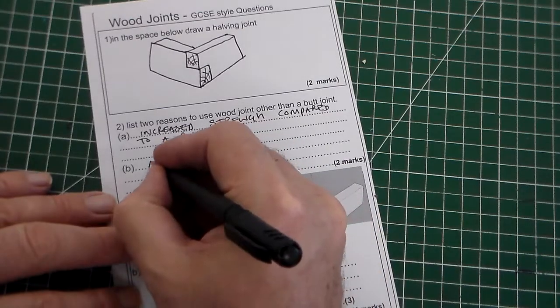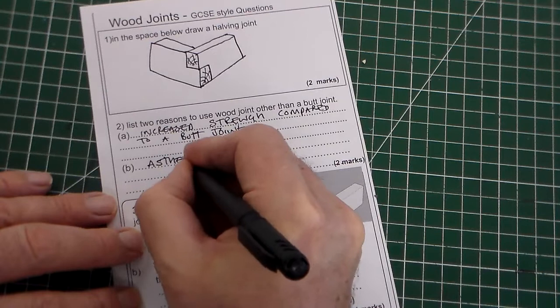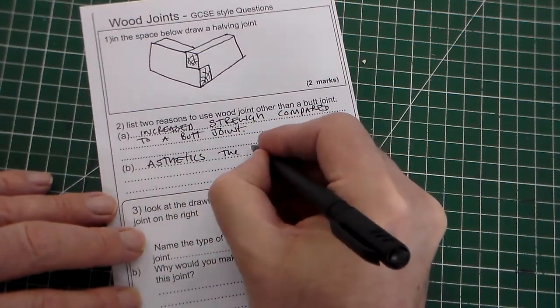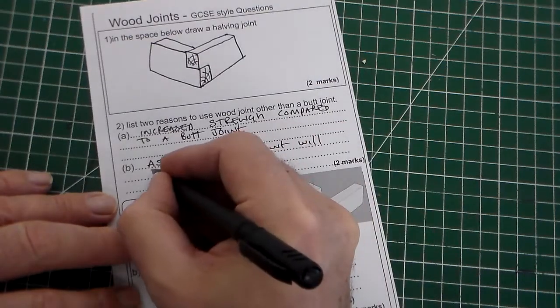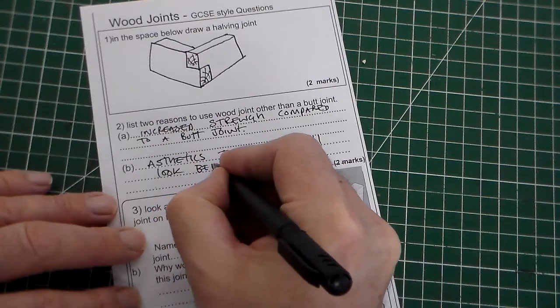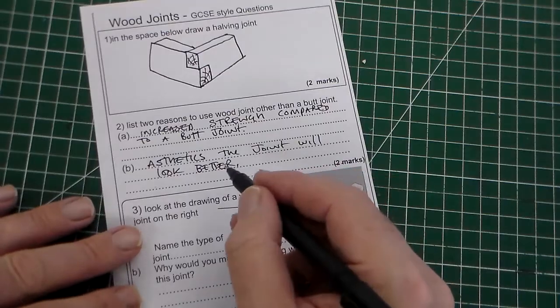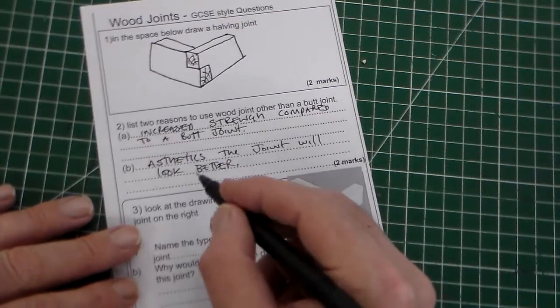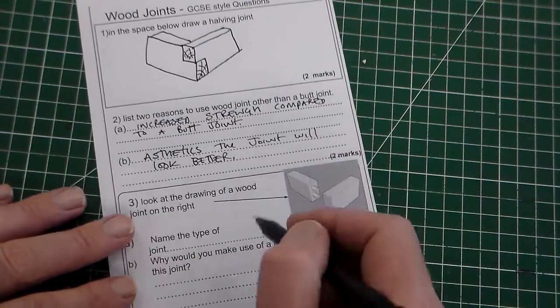B, aesthetics. The joint will look better or nicer. Simply, for a piece of fine furniture or a piece of cabinet or a drawer or a box, if it's got a finger joint or something like that, it just looks better. So it increases strength, it looks better.